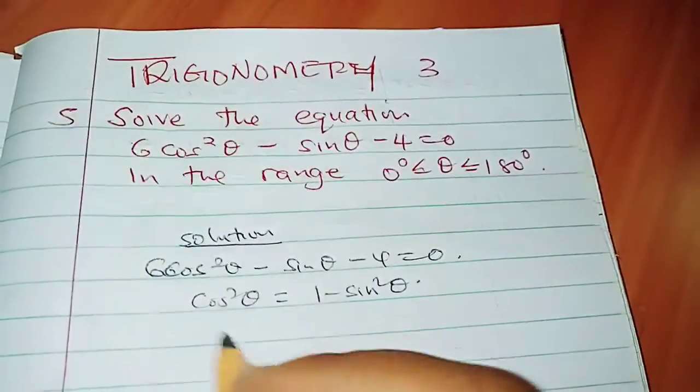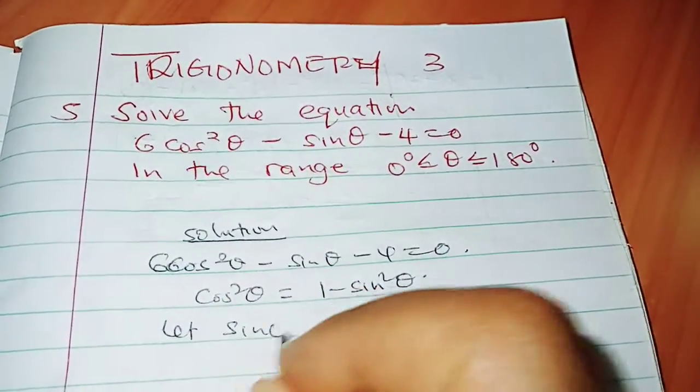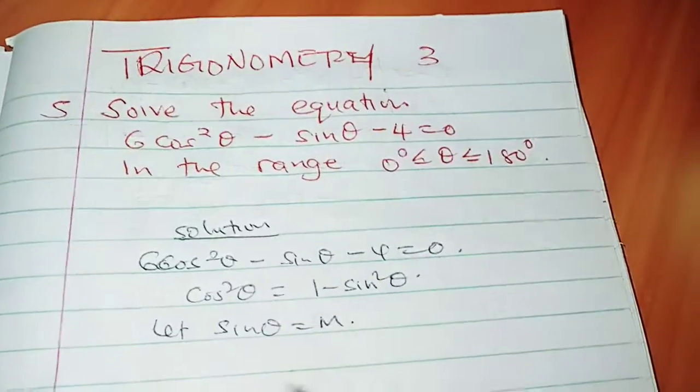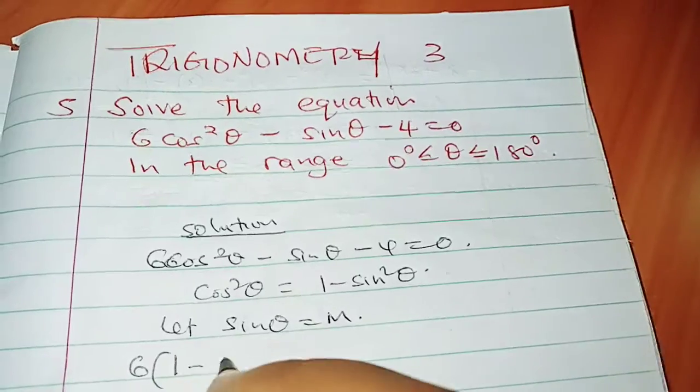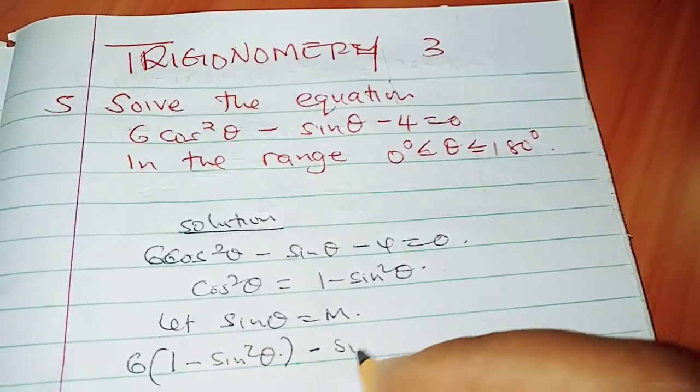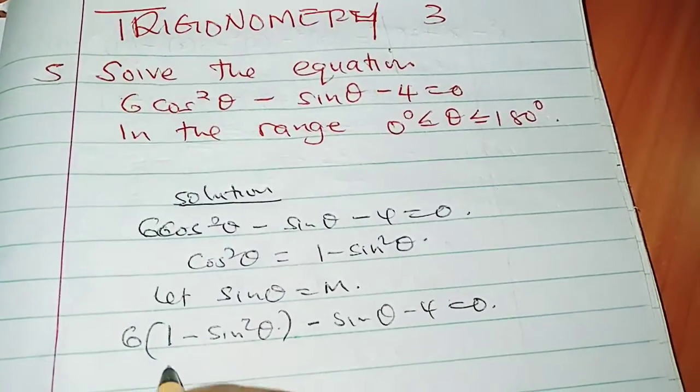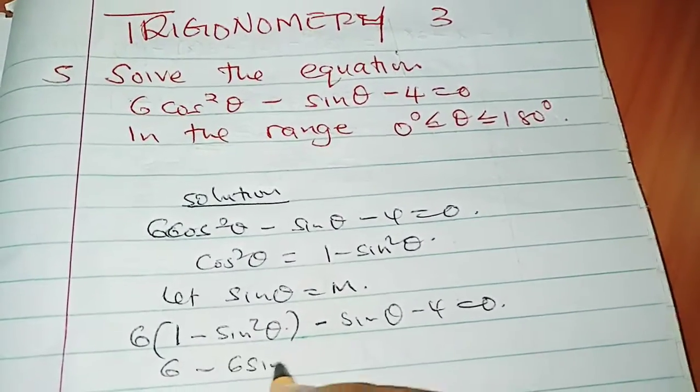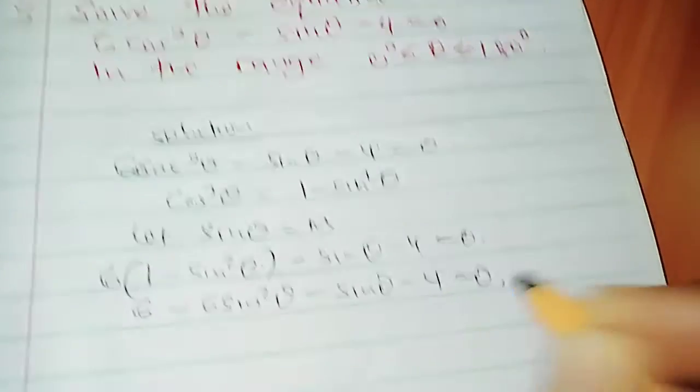And then we can let sinθ equals to m. So in our main equation here, we can write 6(1 - sin²θ) - sinθ - 4 = 0. This is the same as 6 - 6sin²θ - sinθ - 4 = 0.